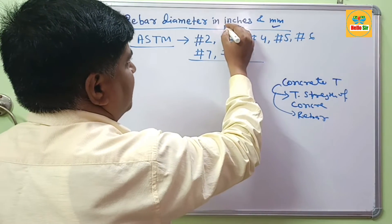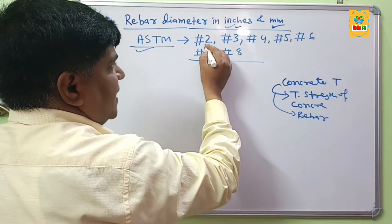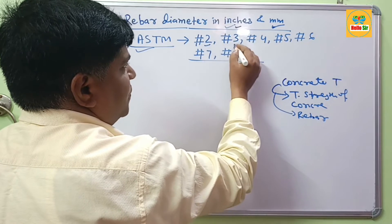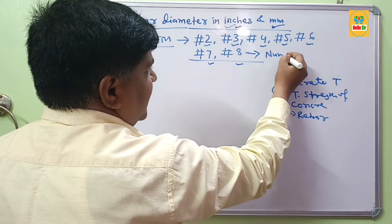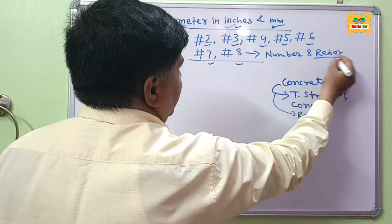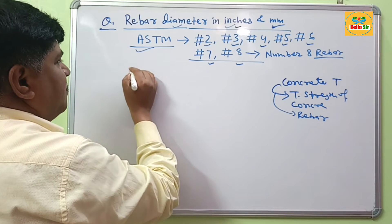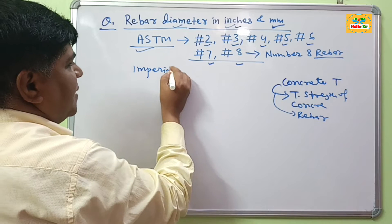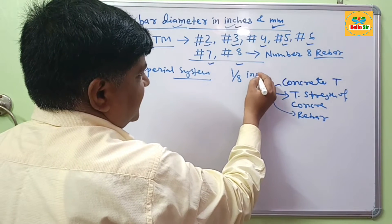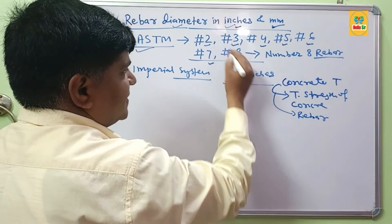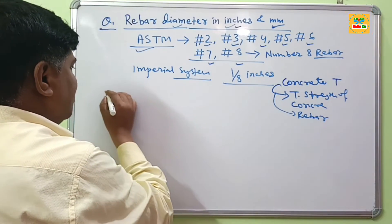Now, how can we find their measurement in inches and millimeters? As per the imperial system, rebar sizes increase in increments of 1/8 inch. If you multiply the rebar number by 1/8 inch, you get the nominal diameter of that rebar in inches.